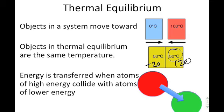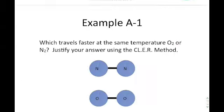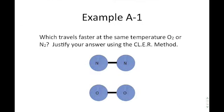Energy is transferred when atoms of high energy collide with atoms of low energy. Example A1: Which travels faster at the same temperature — an oxygen molecule or a nitrogen molecule? Remember, when they're at the same temperature, that means they have the same average kinetic energy.